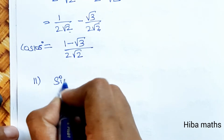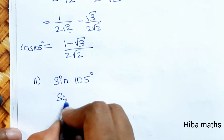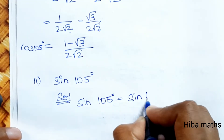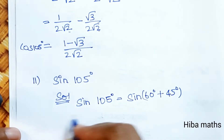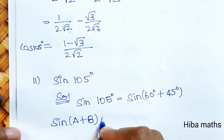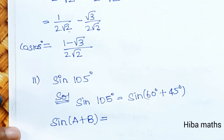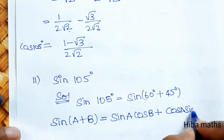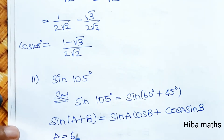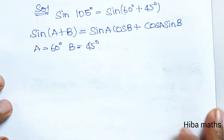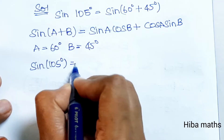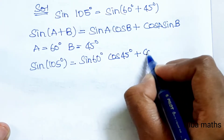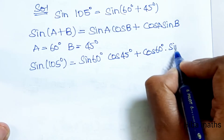Next, find sin 105 degree. We write sin 105 degree as sin(60 + 45) degree. What is the formula for sin(a + b)? sin(a + b) = sin a cos b + cos a sin b, where a = 60 degree and b = 45 degree.